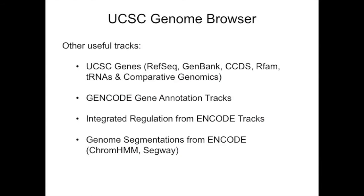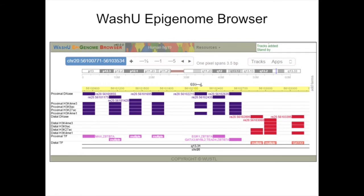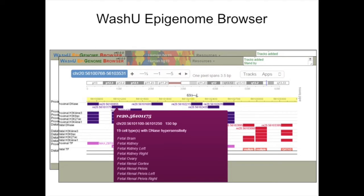Some other useful tracks to incorporate into your analysis on the UCSC Genome Browser include different gene tracks, Gencode annotations, and other ENCODE tracks such as the integrated regulation, as well as genome segments from tools such as ChromeHMM and Segway. Michael has also incorporated this data on the WashU epigenome browser, with tracks separated into proximal and distal regulatory elements and candidate enhancers and candidate promoters. Clicking on one of these regions shows which cell types and tissue types went into creating that particular element.